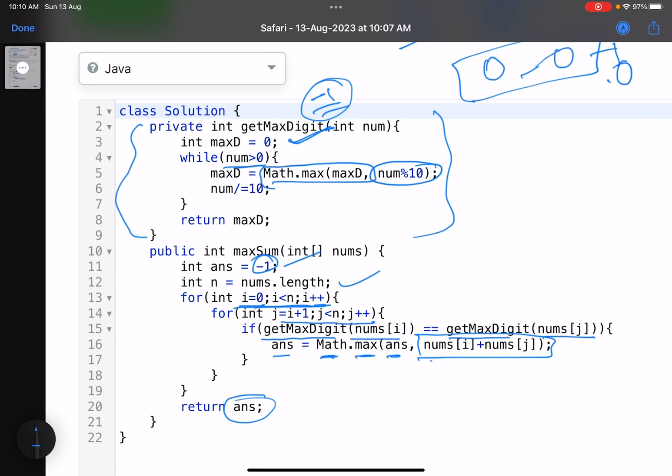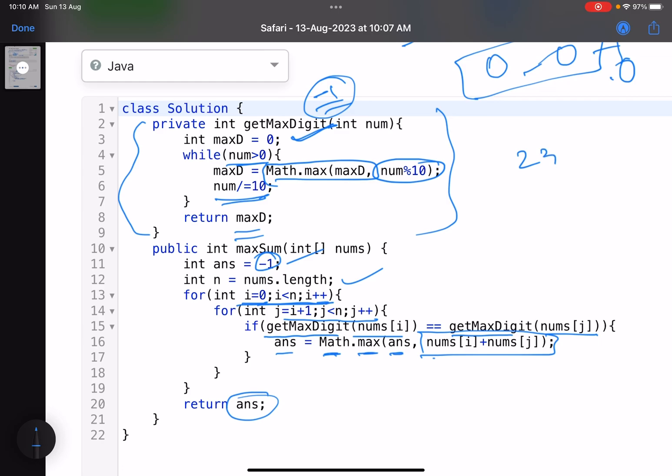Max digit equals zero. While num is greater than zero, find the current digit, update the max digit if needed, num divided by equals 10, return max. For example, 23 is the number. Initialize your max digit as zero. Update with what's the max of three and zero—that's three. Then the next digit is two and three. Getting it? So that's how you basically do it.